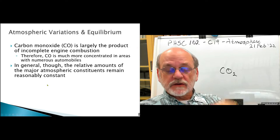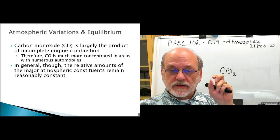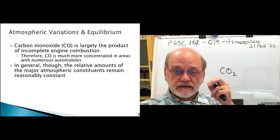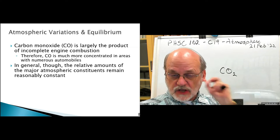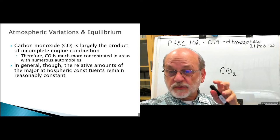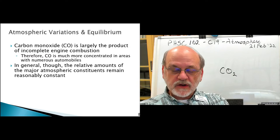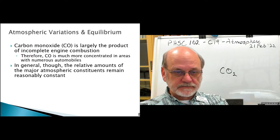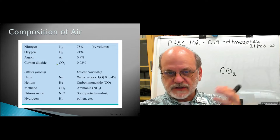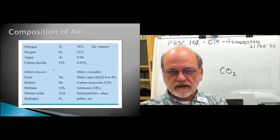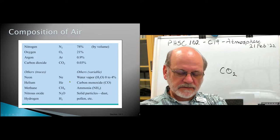These minor components fluctuate widely depending on where you are on the surface of the Earth and your proximity to industrialized countries and metropolitan areas. But the major components — nitrogen, oxygen, and argon — are relatively constant. Carbon dioxide is creeping up over time as we burn more and more fossil fuels.